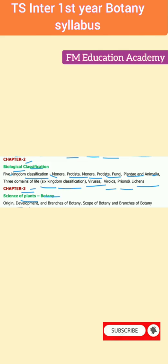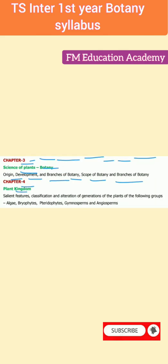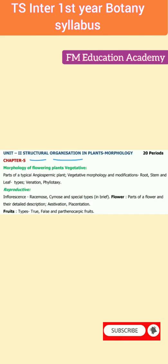Chapter 3: Science of Plants — Botany: Origin, Development and Branches of Botany, Scope of Botany and Branches of Botany. Chapter 4: Plant Kingdom — Salient Features, Classification and Alteration of Generations of the plants of the following groups: Algae, Bryophytes, Pteridophytes, Gymnosperms and Angiosperms.